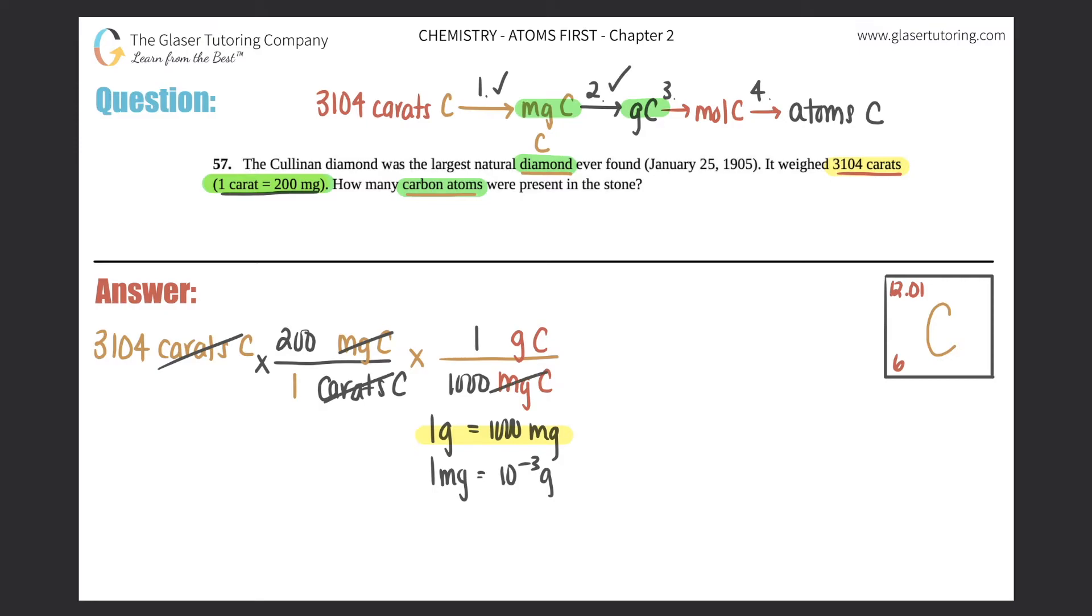Now multiply by another ratio - grams of carbon on the bottom and moles of carbon on top. One mole of anything equals the molar mass in grams of that same thing. The molar mass is found on the periodic table. For carbon, it's the higher number - 12.01, not the six (which is the atomic number). So one mole equals 12.01 grams. Grams cancel out and the third step is done.